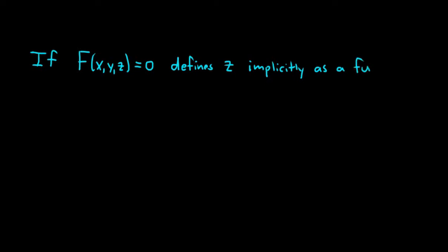So here is the setup. If we have a function F of x, y, and z, and it's equal to 0, so if this defines z implicitly as a function of x and y,